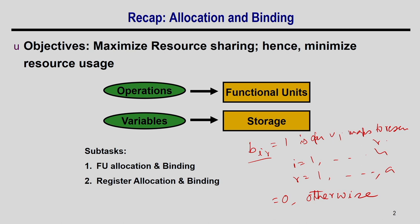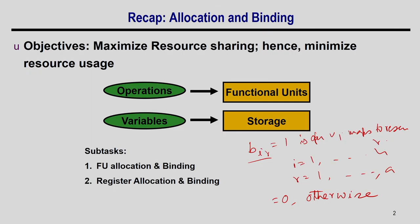In ILP formulation, we find all constraints needed and an objective function. The ILP maps values to unknown variables such that all constraints are satisfied and the objective is achieved. BIR is the unknown variable because we do not know which operation maps to which FU. In some cases A may also be unknown — if it is not a resource-constrained schedule, A is not known and our objective is to find the minimum value of A.